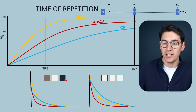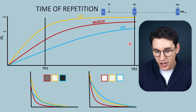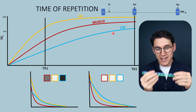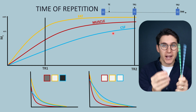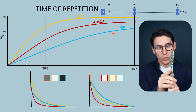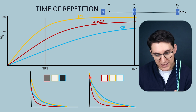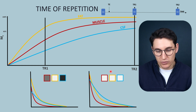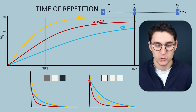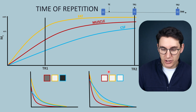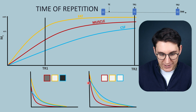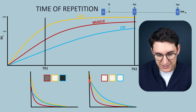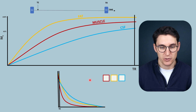If we wait for a longer TR, we allow full recovery of the longitudinal magnetization vector in all tissues before flipping 90 degrees — and then we lose that T1 contrast. If we sample at a short TE, we get no contrast but high signal between the tissues.